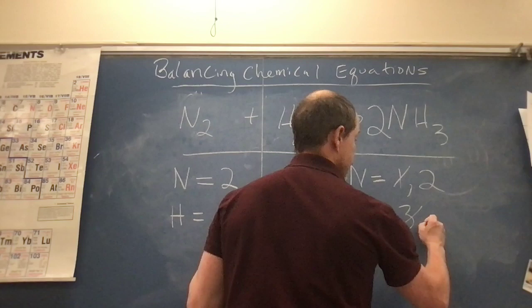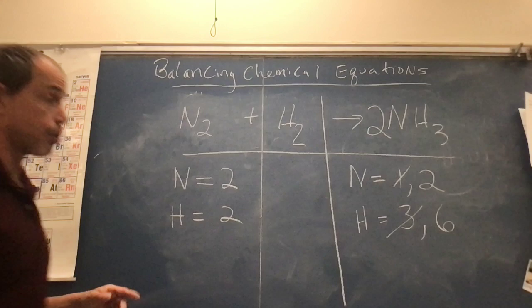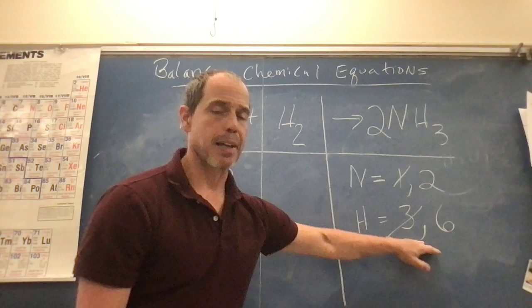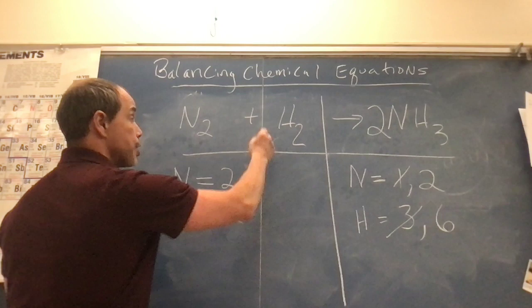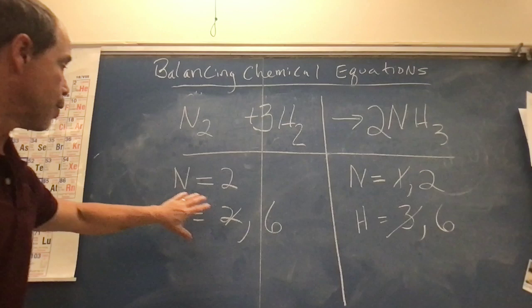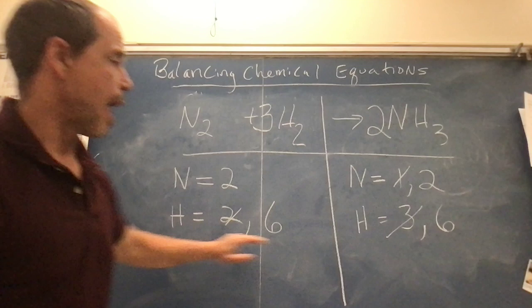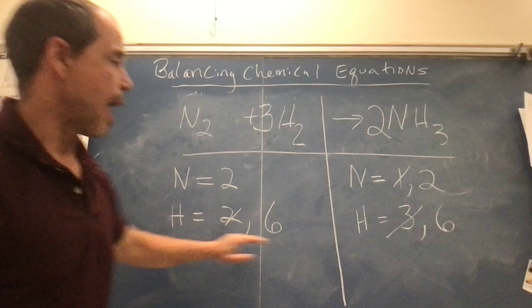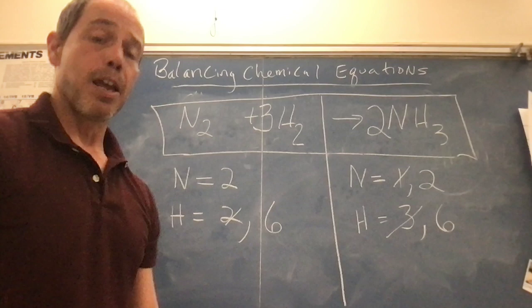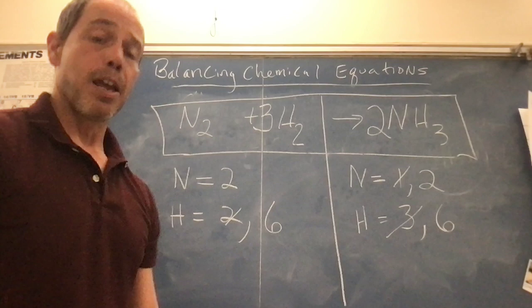Now I have six hydrogens on the right but only two on the left. Two goes into six three times, so I put a coefficient of 3 in front of H2 — giving me 3×2=6 hydrogens. Checking the chart: two nitrogens and two nitrogens, six hydrogens and six hydrogens. The balanced equation is N2 plus 3H2 yields 2NH3. The answer is at the top; the chart below is just the work you showed.